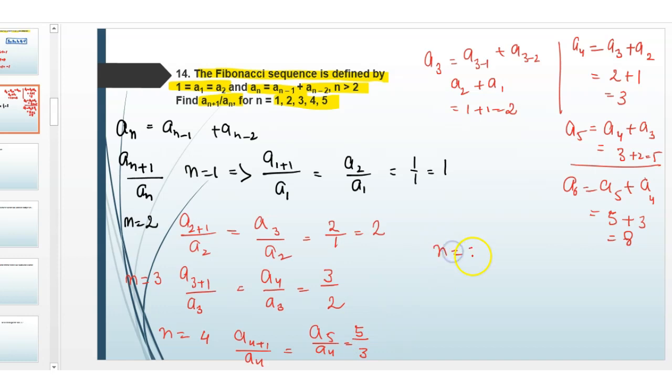Next, for N equals 5, A6 divided by A5. A6 is 8 divided by A5 is 5.